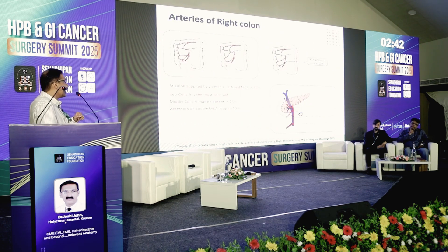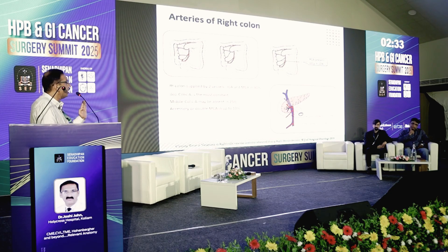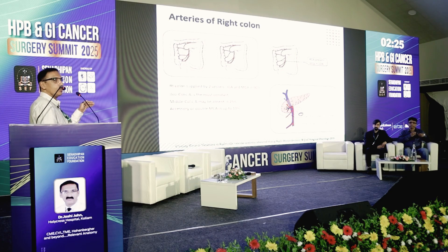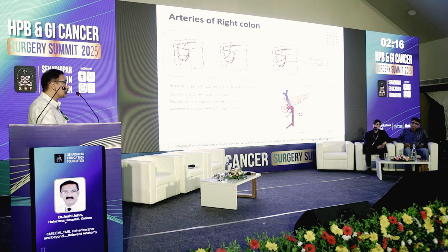Regarding the arterial supply of the right colon, it is mainly supplied by two vessels. The most consistent is the ileocolic artery and the middle colic artery, which is found in around 90% — around 25% may be absent. The right colic artery is actually present in only around 10% of patients. Surgeons should realize that most of these arteries cross over the superior mesenteric vein, so we have to ligate these arteries at the root. If they are crossing posteriorly in 2% of patients, it may make it difficult for the surgeon to do so.